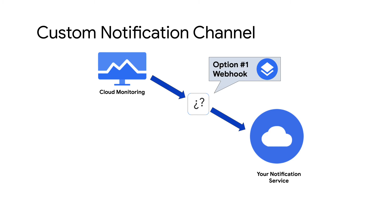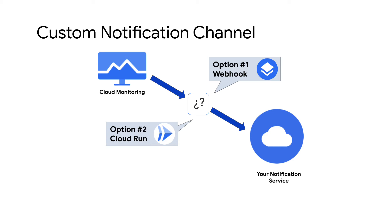The first option is to use a webhook. The second option uses Cloud Run to generate an API call to your preferred notification service. The rest of this video walks you through how to implement the latter option using Cloud Run and an API call.